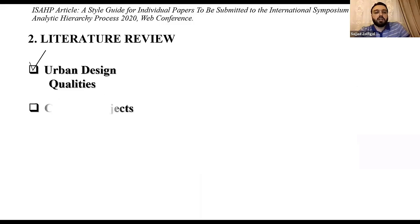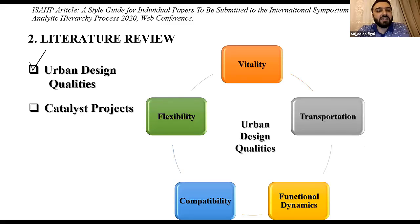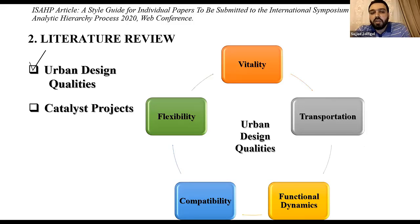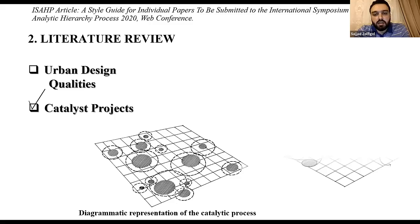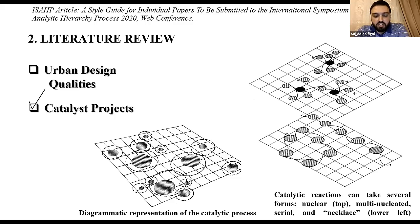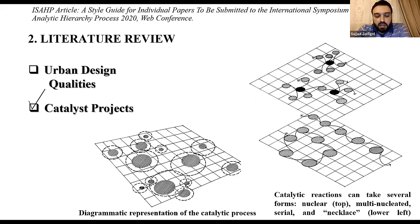For the literature review, there is much research about urban design quality in the world. For our context, we use urban design quality that drives these criteria: vitality, transportation issues, flexibility, compatibility, and functional dynamics. Catalyst projects are the latest approach to improve all types of urban environments. This approach has shifted from giant to small-scale urban design projects, which increase social interaction and cultural prosperity in urban spaces.